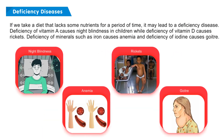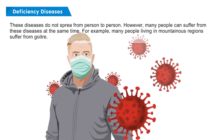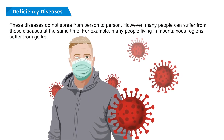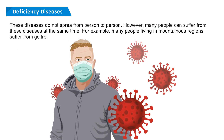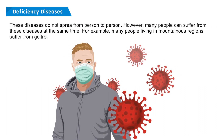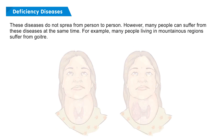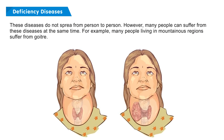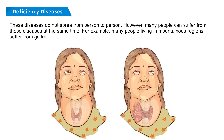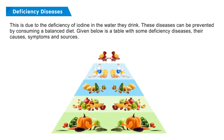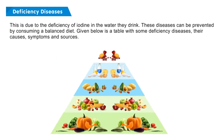Deficiency of Vitamin A causes night blindness in children, while deficiency of Vitamin D causes rickets. Deficiency of minerals such as iron causes anemia, and deficiency of iodine causes goiter. These diseases do not spread from person to person; however, many people can suffer from them at the same time. For example, many people living in mountainous regions suffer from goiter due to the deficiency of iodine in the water they drink.